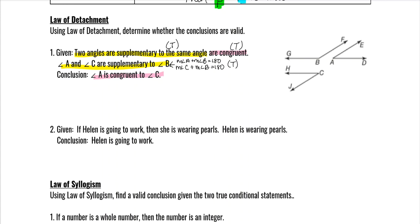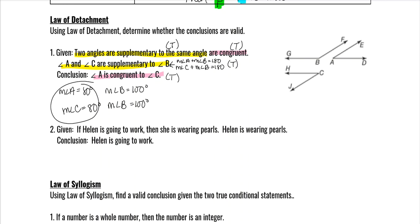Let me make up some fake angles to prove it. Let's say angle A is 80°. For it to be supplementary with B, angle B would have to be 100° to add up to 180°. For the second one, using that same angle B, angle C would also have to be 80°. That shows A and C are congruent — so this conclusion is true.